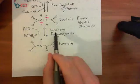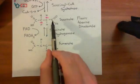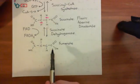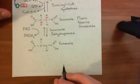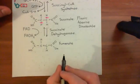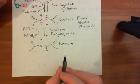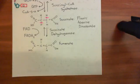So succinate dehydrogenase converts succinate into fumarate. Fumarate is then going to go further on, and we're going to try and turn it back into oxaloacetate. We'll continue this discussion in the next video.